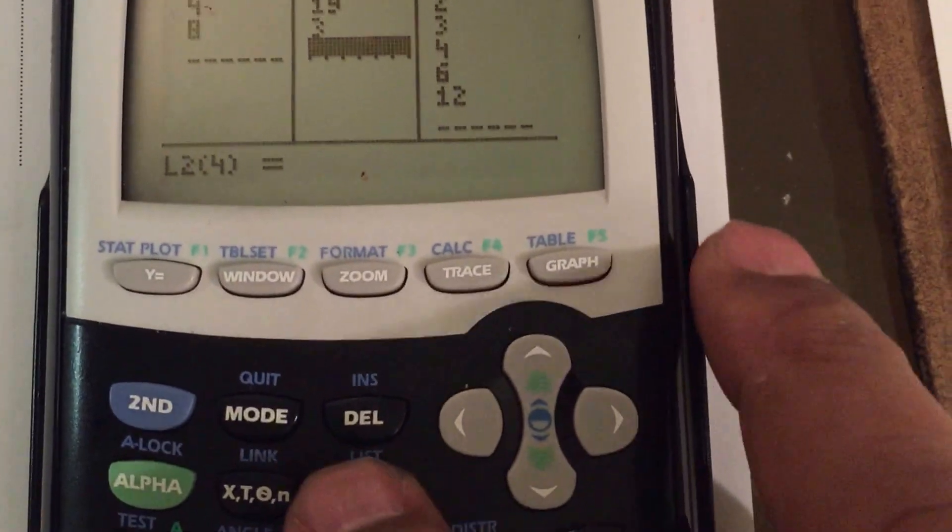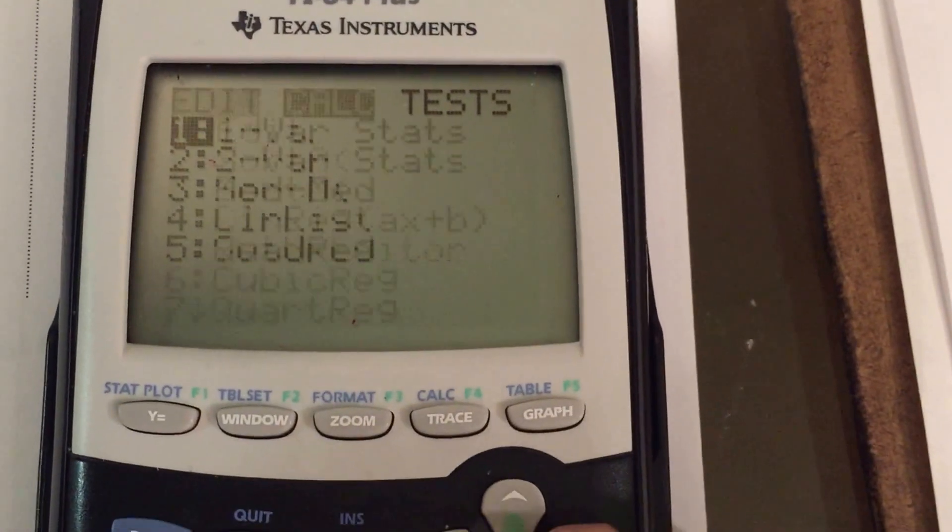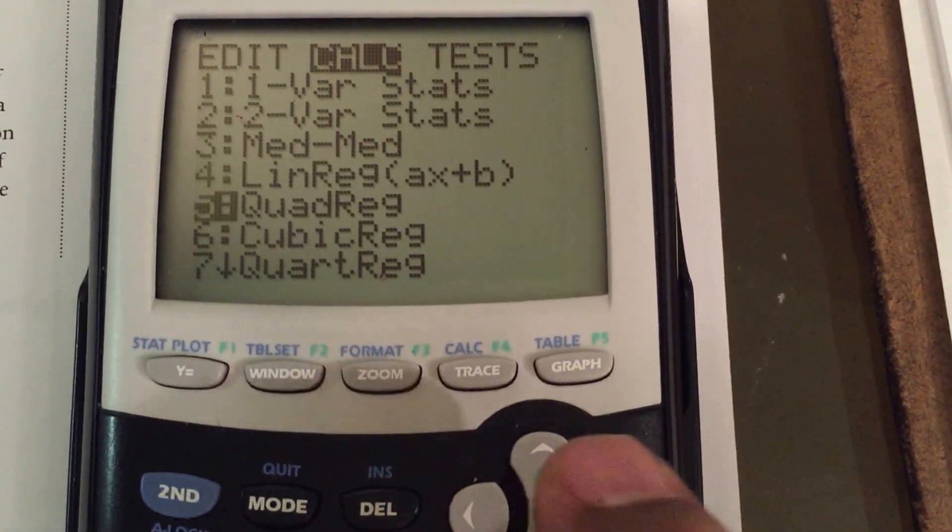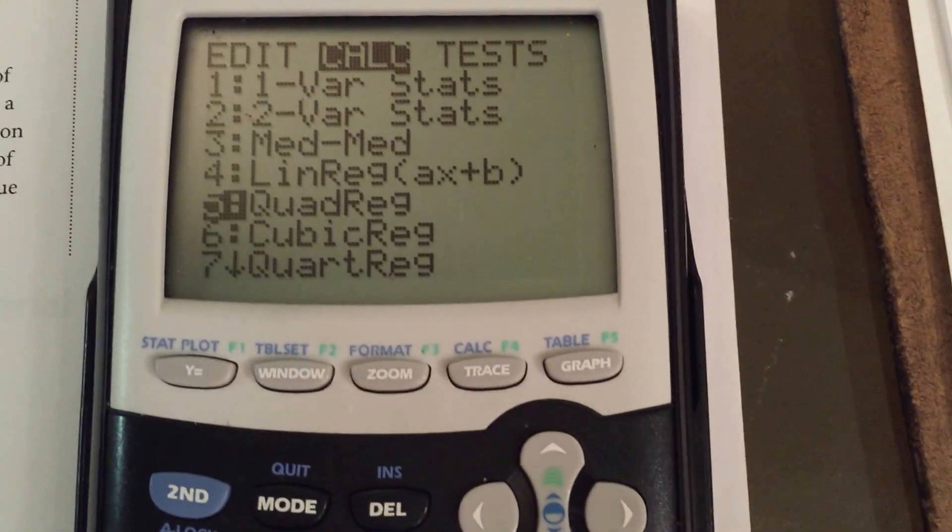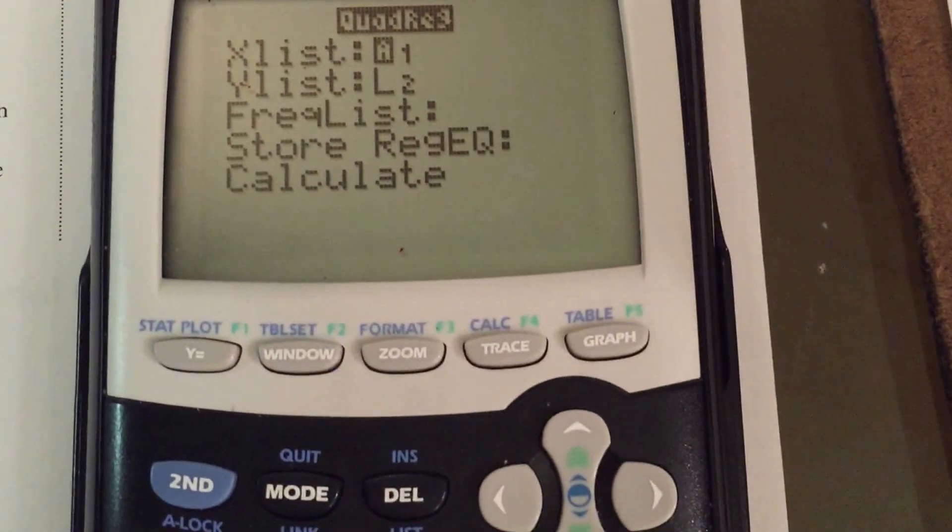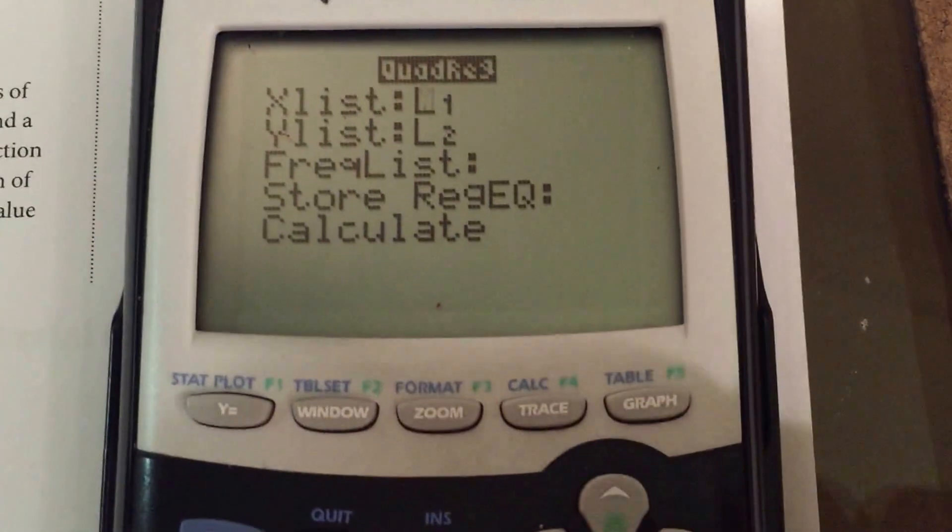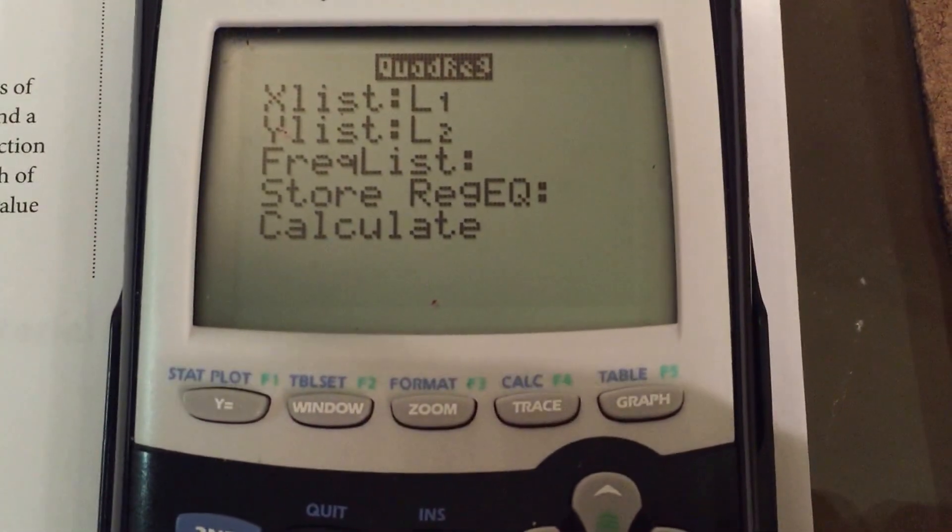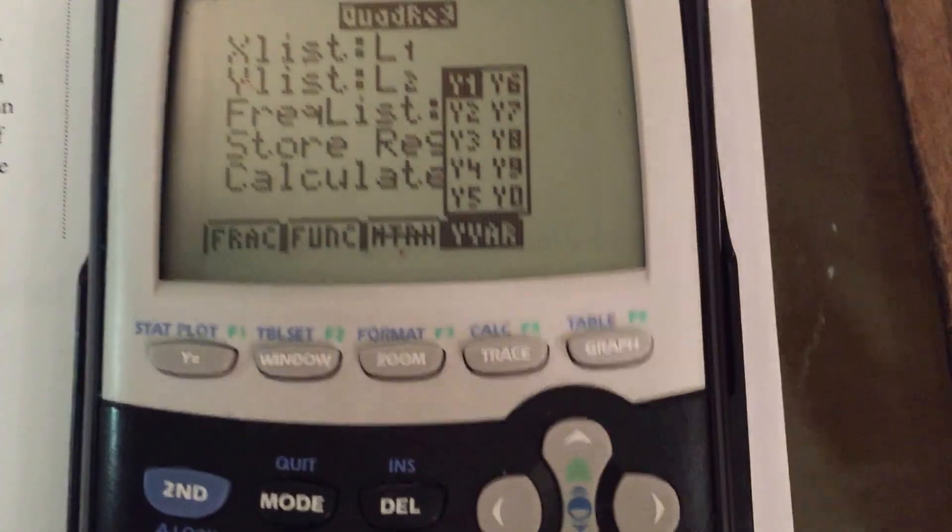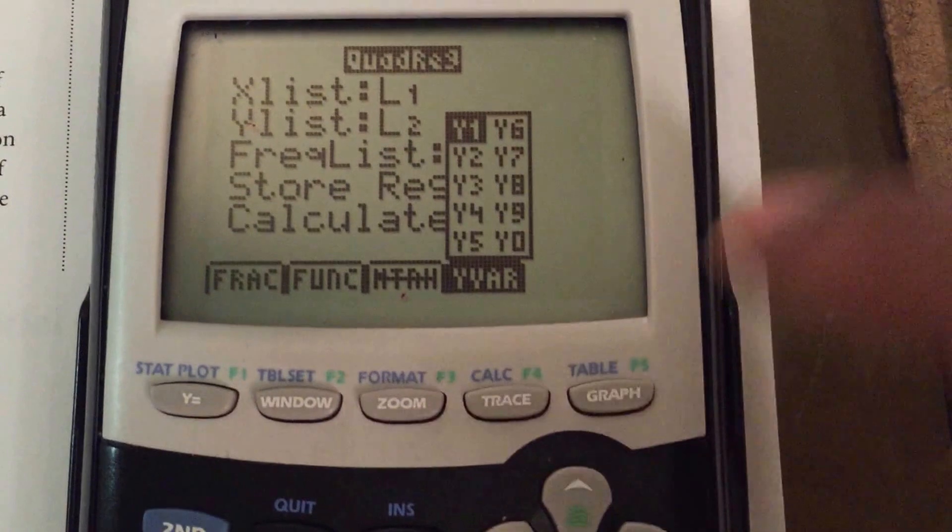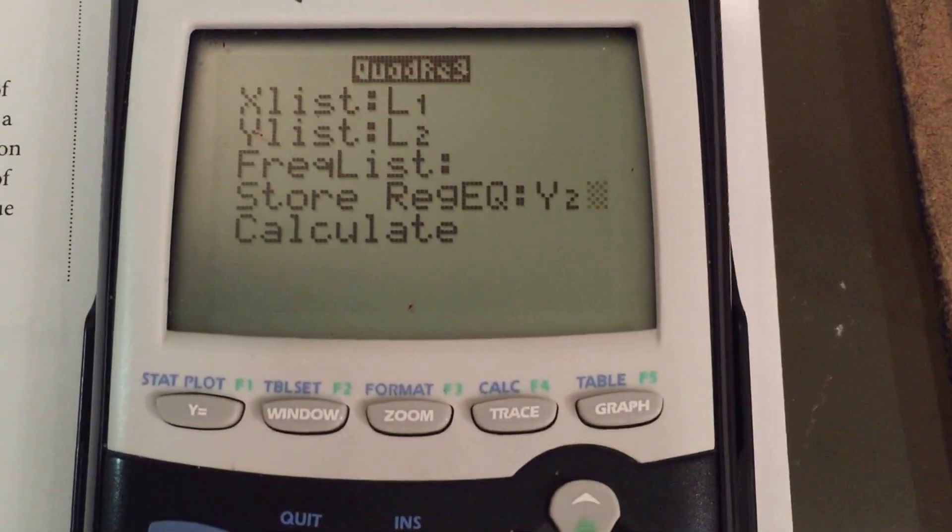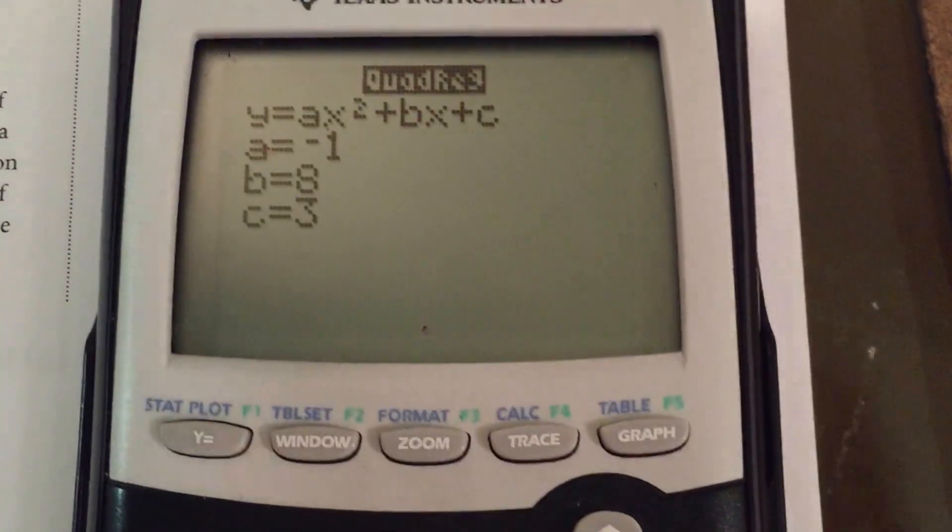So now again we would go to the stat key, and we're going to arrow over to the calc tab. And we're going to go down in this case to option 5, which is quadratic regression. So you press enter. Now again we stored the X values in L1, the Y values in L2. And now we're going to store the calculated equation. And we want to put it in a different one. We don't want to put it in Y1 because it'll overwrite what we just put in there for the linear regression. So we're going to use the Y2 for this one. So you press enter and then hit the calculate button. Boom. And there you go.